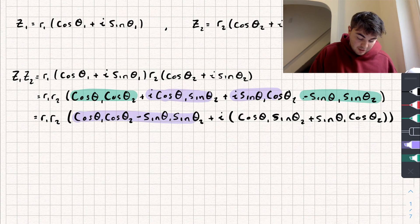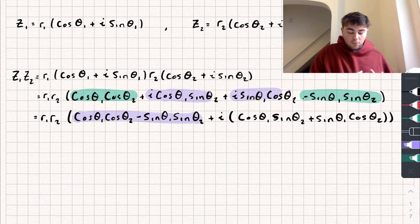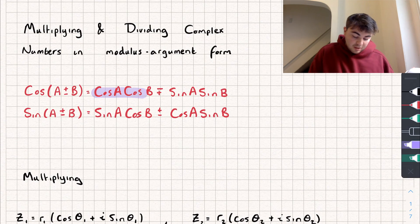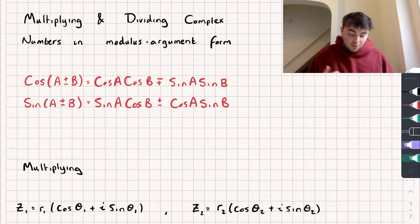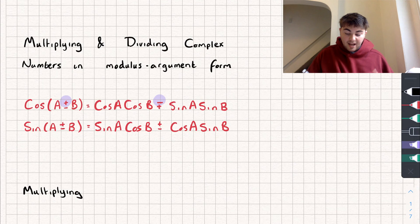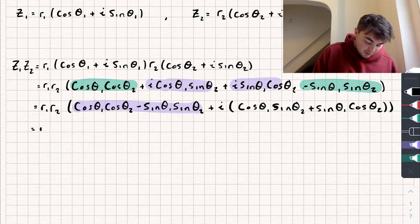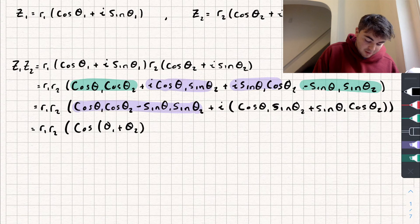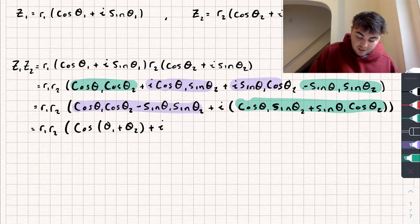Now we can use our angle addition formulas. Looking at the real part: cos theta1·cos theta2 minus sine theta1·sine theta2 corresponds to the cosine addition formula. Because we're subtracting them, we're adding the angles, so that part equals r1·r2·cos(theta1 + theta2).